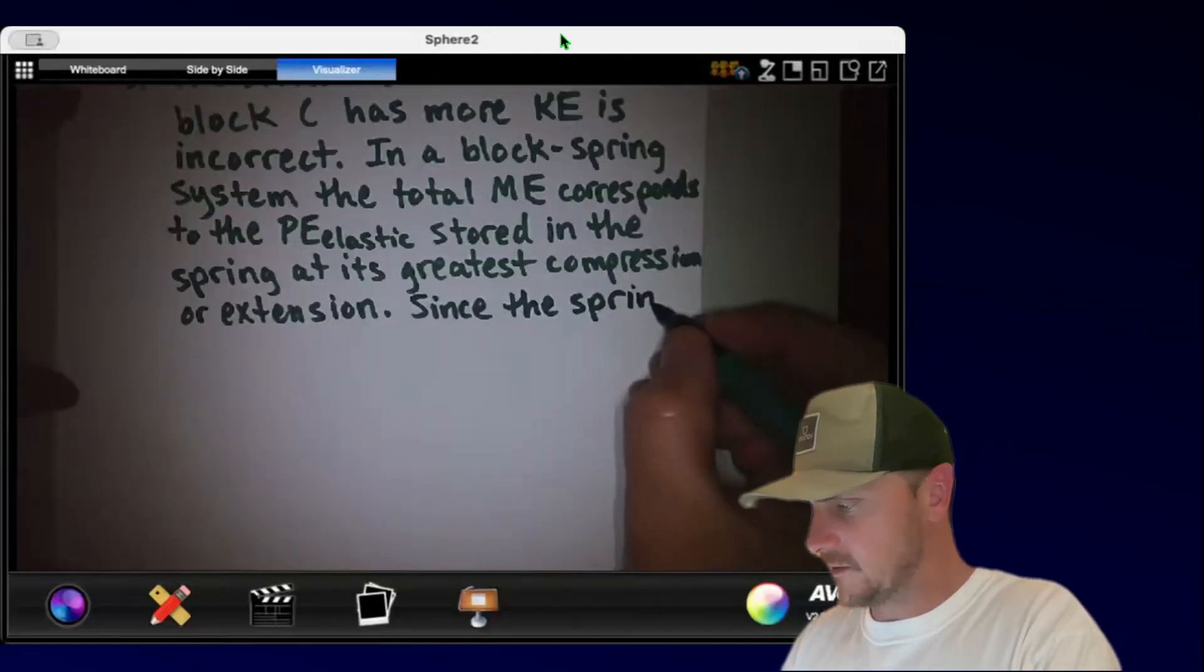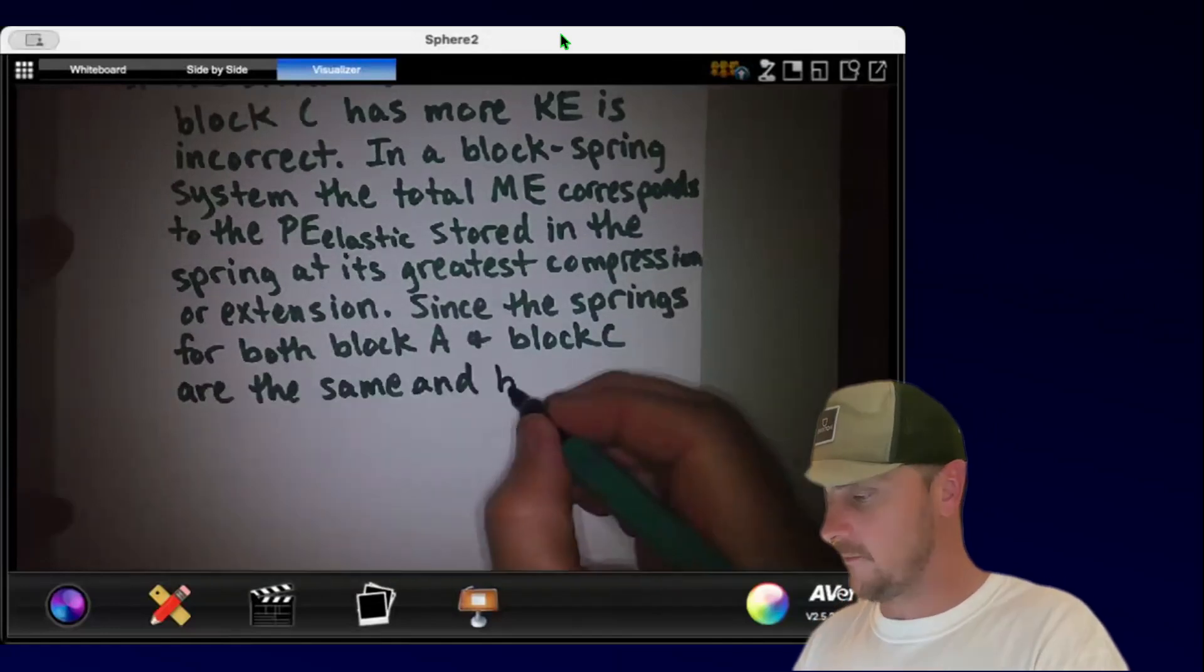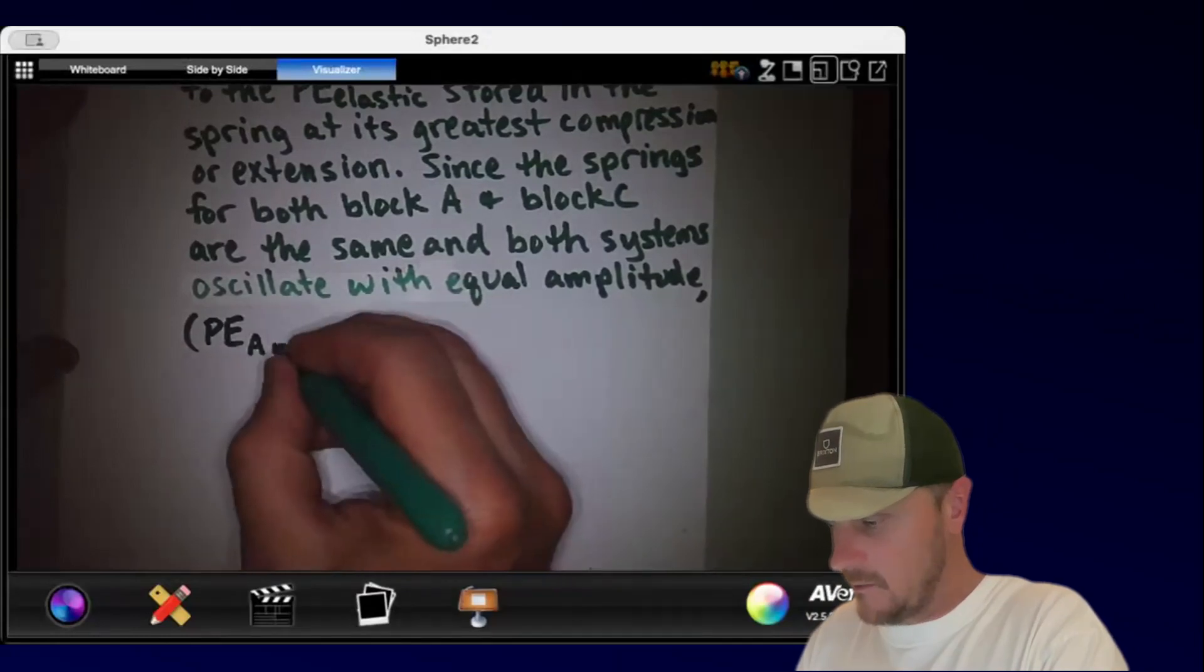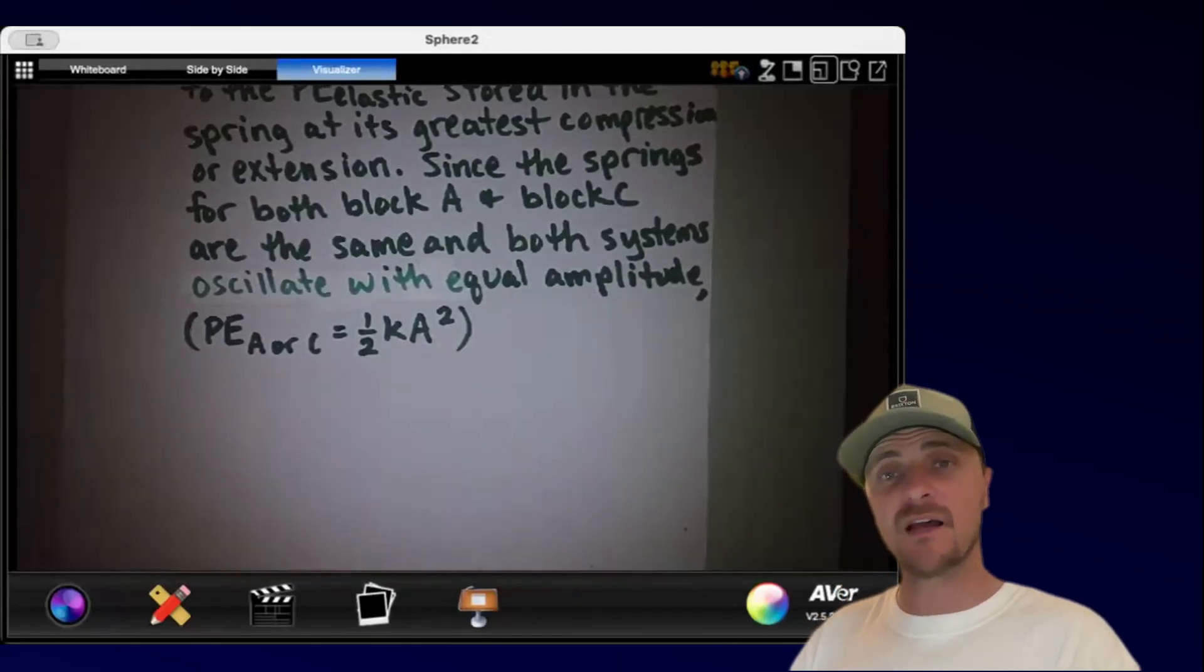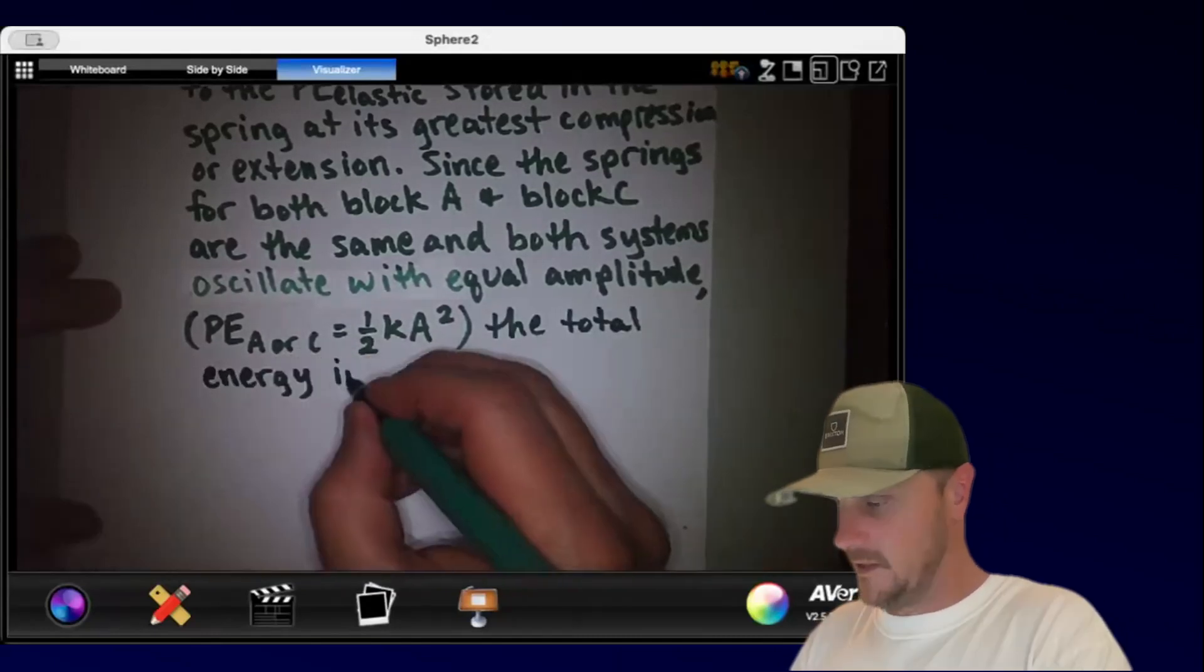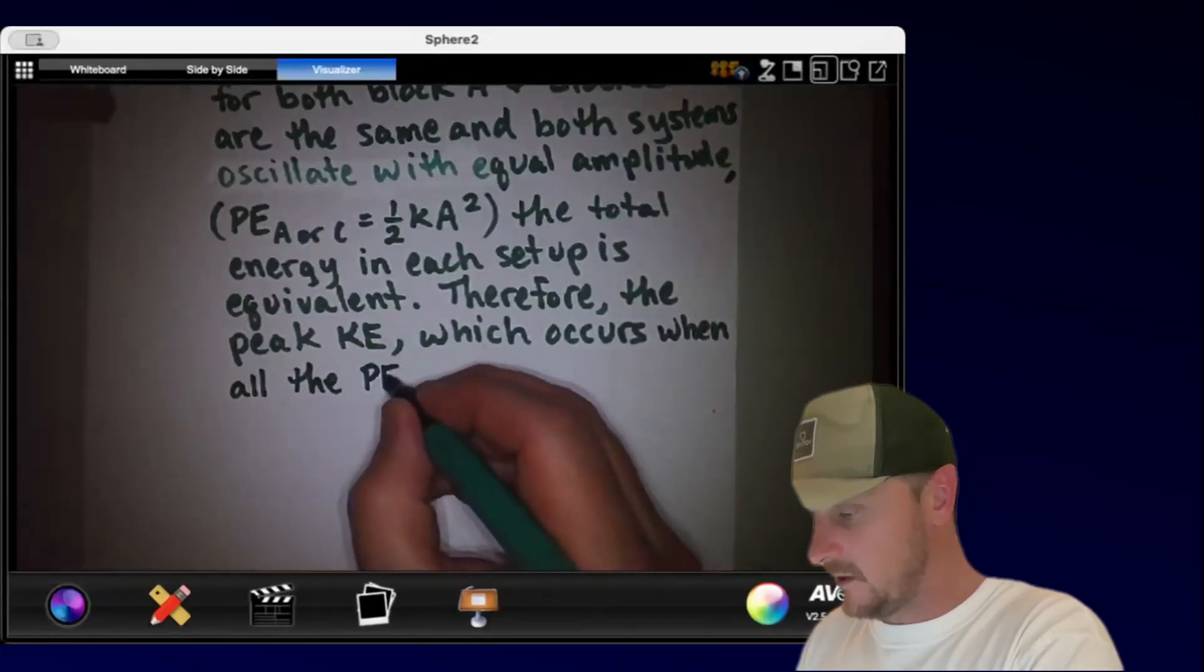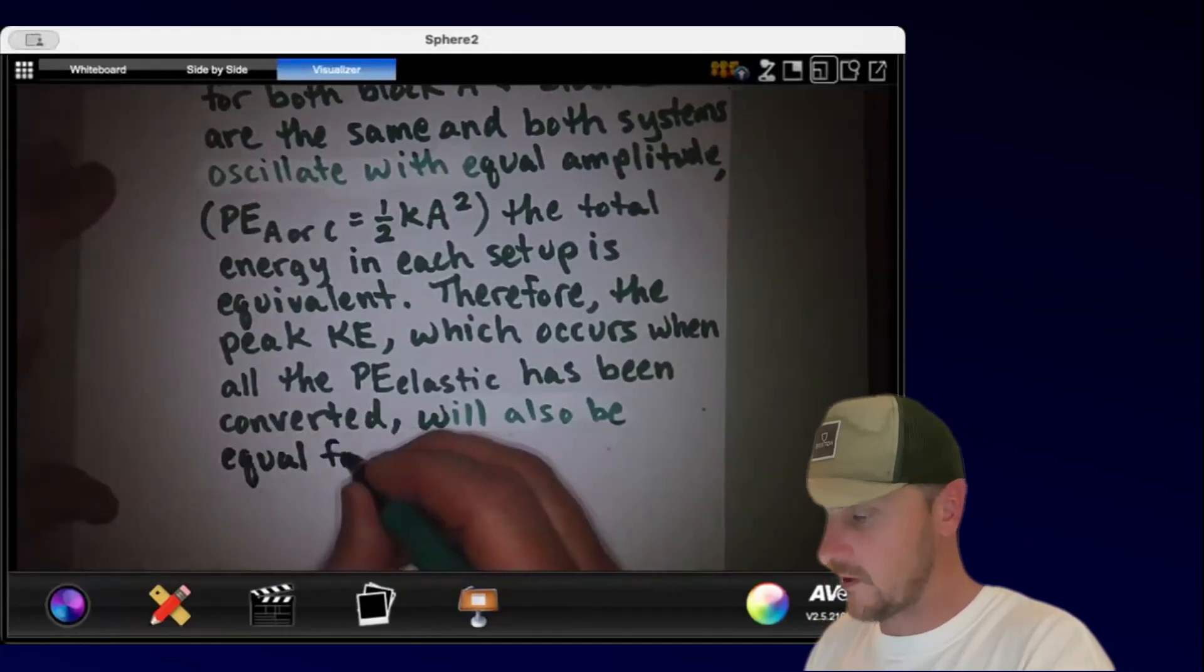Since the springs for both block A and block C are the same, and both systems oscillate with equal amplitude, in here I'm going to write the equation P.E. for A or C equals one-half K A squared, showing that both systems have the same spring constant and amplitude of oscillation. The total energy in each setup is equivalent. Therefore, the peak kinetic energy, which occurs when all the P-E elastic has been converted, will also be equal for both blocks.